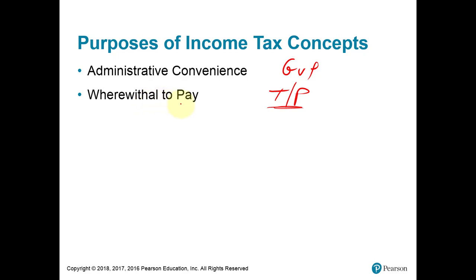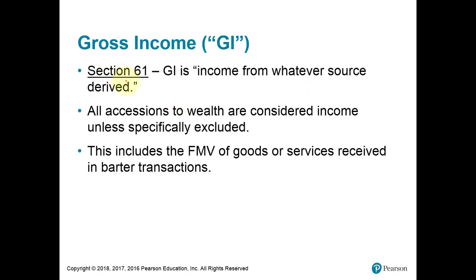Most times tax is triggered by an event where the taxpayer will eventually have funds to pay. Most of us earn our big income through salary and wages, and the employer withholds income taxes throughout the year, so we have the wherewithal to pay. Section 61 of the Internal Revenue Code says that everything is taxable income unless it's specifically excluded — that section is called gross income.